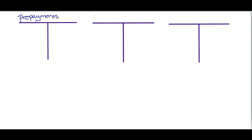Today we're going to have a look at prepayments using these three T-accounts. We're going to label them: prepayments, bank, and profit and loss. The bank in the center is where we always start, especially when you're first starting out in finance — it's best to work out what happens in the bank and then what happens in either the profit and loss or the balance sheet.